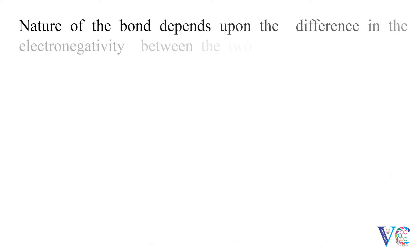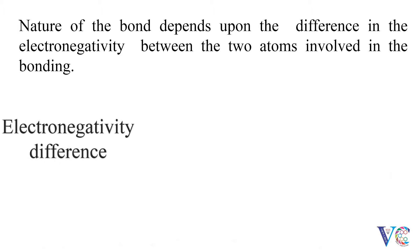Nature of the bond depends upon the difference in the electronegativity between the two atoms involved in the bonding. If the electronegativity difference is 0 to 0.39, a pure covalent bond will be formed.